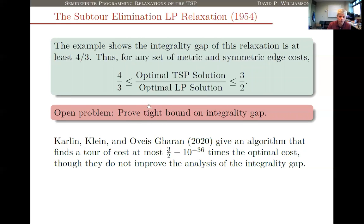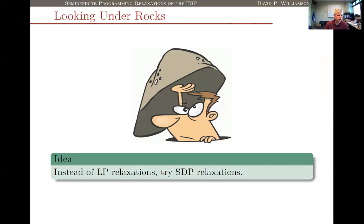So there's this outstanding open problem of trying to prove a tight bound on the integrality gap of the subtour LP. A couple of years ago I decided that maybe the way to approach this problem was to think differently — an agenda I ended up calling 'looking under rocks.' Rather than throwing more time at the subtour LP, maybe the right thing to do is look at other types of relaxations — LP or semidefinite programming relaxations — and see whether we couldn't possibly prove bounds on them instead, hopefully getting a better bound than the 3/2 we know for the subtour LP.